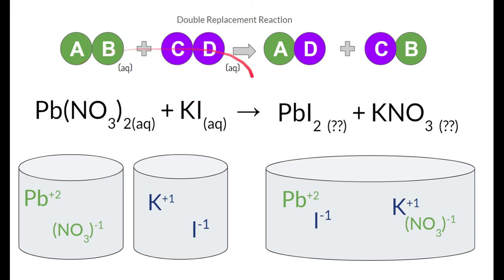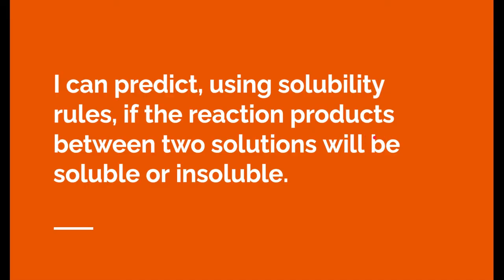Notice over here, they start off as aqueous substances. Right here, these are the phase symbols. This is aqueous because it's dissolved in water. This is aqueous because it's dissolved in water. Now these substances in the end, we need to figure out what happens to them. To do that, we're going to have to describe what their phase symbols are.